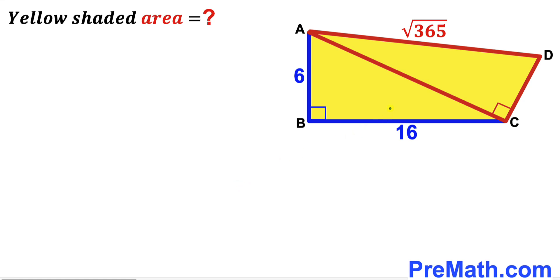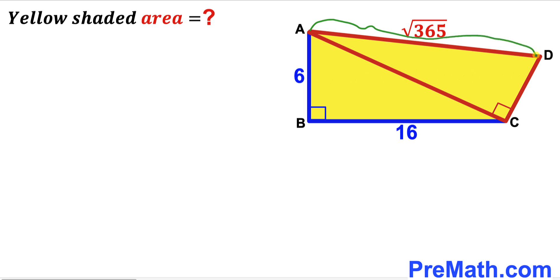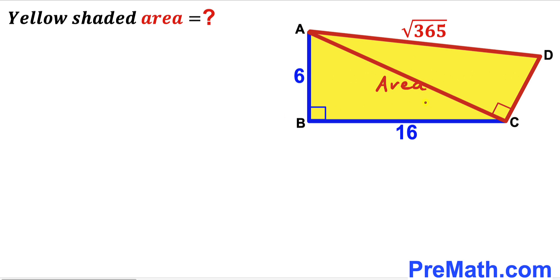Welcome to PreMath. In this video we have a yellow shaded quadrilateral ABCD that consists of two right triangles: right triangle ABC and right triangle ACD. The side length AB is 6 units, the side length BC is 16 units, and side AD is √365 units. The 90-degree angles are marked, and our task is to calculate the area of this yellow shaded quadrilateral ABCD.